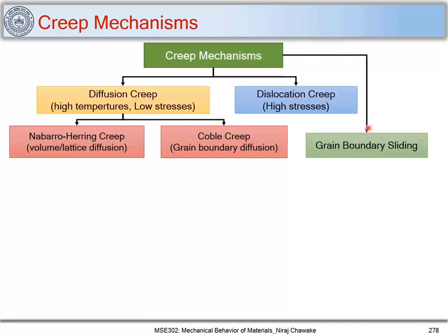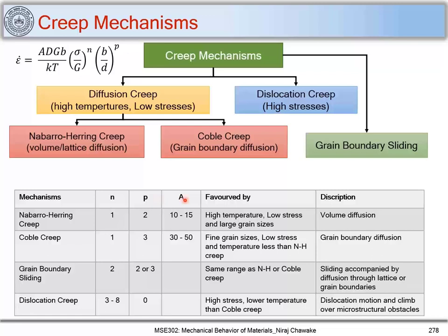The third mechanism is grain boundary sliding. Now let's write down the generalized form and see the different values of n and p that indicate which creep mechanisms are operating. For Nabarro-Herring creep, n equals 1 and p equals 2, with Dorn constant of 10 to 50. It occurs at high temperatures, low stress, and large grain sizes. With large grain sizes, the grain boundary fraction is lower and diffusion occurs predominantly through the lattice — that is why it is called Nabarro-Herring creep, characterized by volume diffusion.